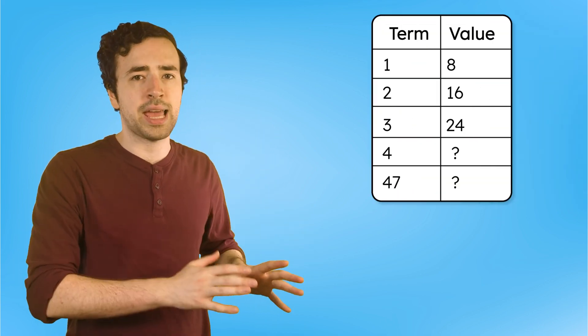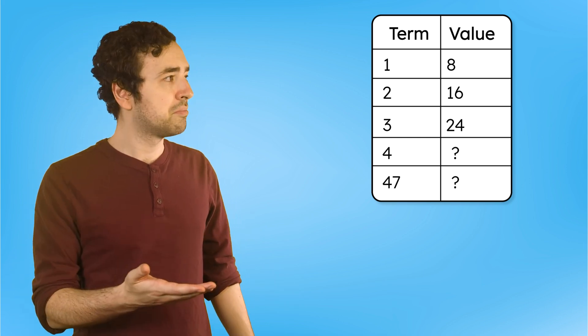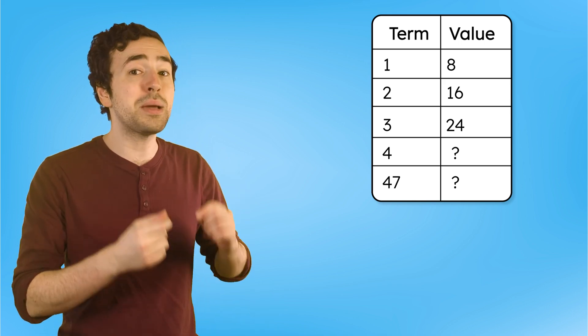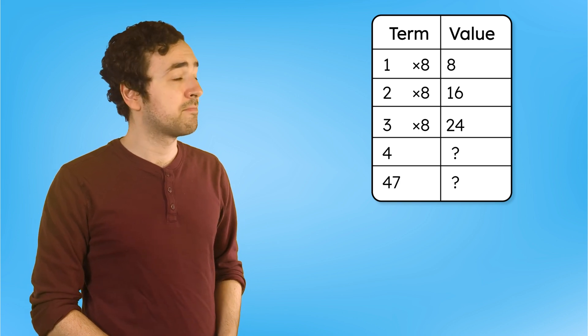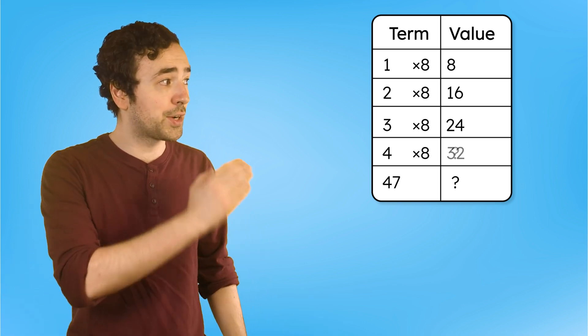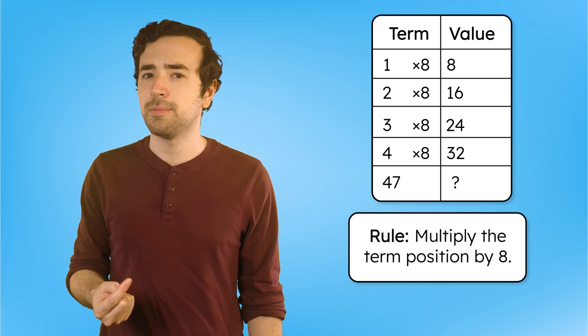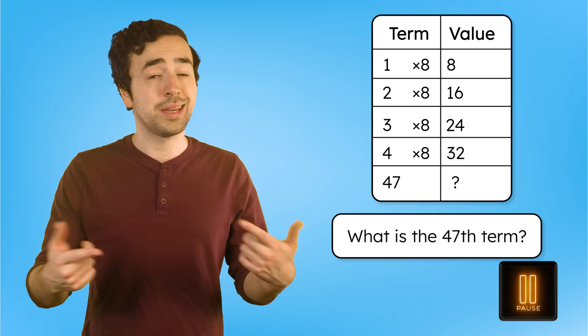Not all patterns are created by building on the previous number though. Sometimes the rule is based on the term number, or where the number falls in the sequence. Check out this table. What's the relationship between one and eight? Two and 16? Three and 24? Each time, the term is being multiplied by eight. So what would the matching value for the fourth term be? Well, four times eight is 32, so 32 goes here. So the rule is to multiply the term number by eight. How could you figure out the 47th term's value? Pause here and record your thinking in your guided notes.